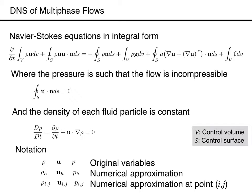To find the flow we solve the Navier-Stokes equations. The Navier-Stokes equations can be written in many forms, all of which can be used as a starting point for numerical approximations. Here we start from the integral form of the equations, as obtained directly by applying the conservation laws of physics to fluid flow. The differential form may be more familiar, but using the integral forms keeps us as close to the physics as possible and requires a minimum number of assumptions.